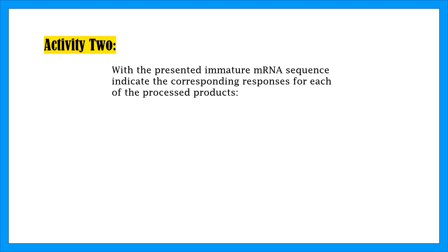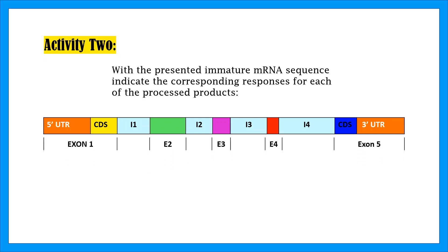In the second activity, we're asked the following question. Would the presented immature mRNA sequence indicate the corresponding responses for each of the processed products, and given this mRNA sequence? If we take a look at this sequence, we can see it contains the 5' UTR, the coding sequence, 4 introns, and 5 exons. The exons are the ones you want to keep your eye on here.